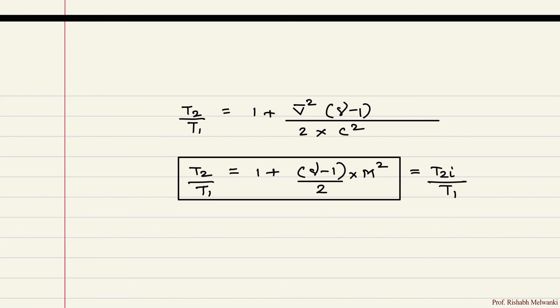This equation you have to remember and this will be equal to T2i upon T1. So what is the use of this equation? If Mach number is given, if the aircraft is moving in air, gamma is known, gamma is 1.4 for air, and atmospheric temperature is known T1, so we can find stagnation temperature T2 which is equal to T2i.